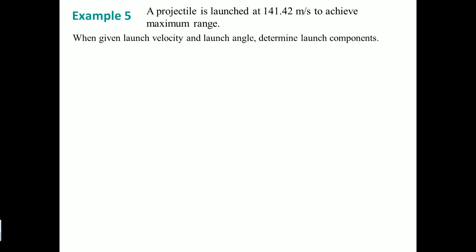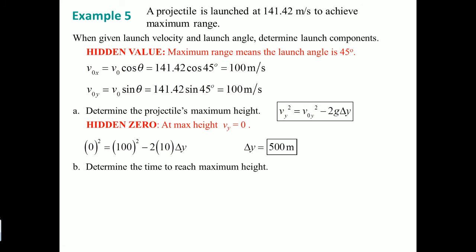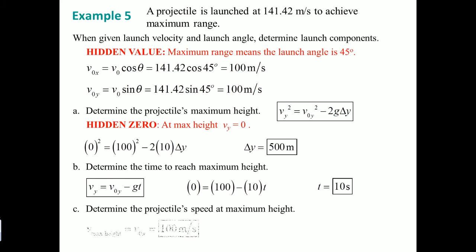Example five works backwards. For maximum range, set theta equal to 45 degrees. The maximum height condition is where Delta Y equals zero at the peak.